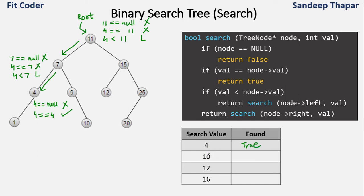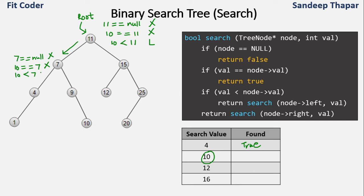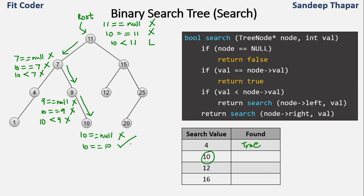For search value 10: at 11 — not null, not equal to 10, and 10 is less than 11 so go left to 7. At 7 — not null, not equal to 10, and 10 is not less than 7 so go right to 9. At 9 — not null, not equal to 10, and 10 is not less than 9 so go right. At 10 — 10 equals 10, so return true. Value 10 is present.